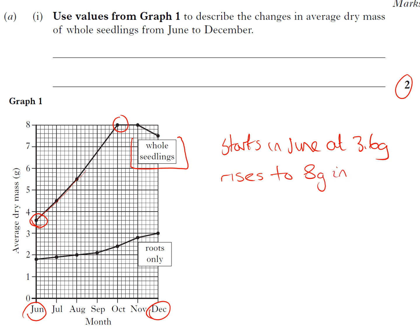You then look at it and you go, well it then rises to—what are we going up to?—8 grams in October. Then remains at 8 grams in November because here we need to describe that point.